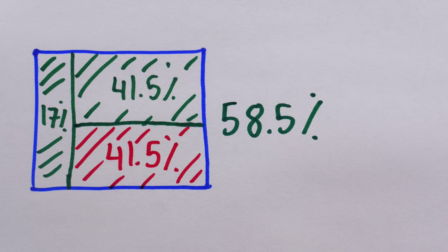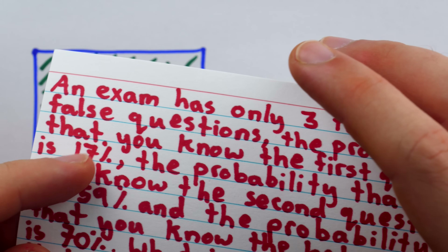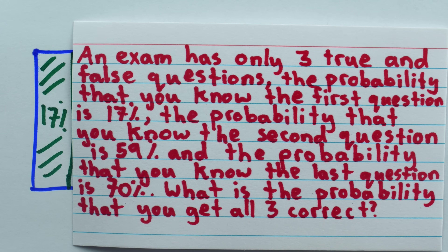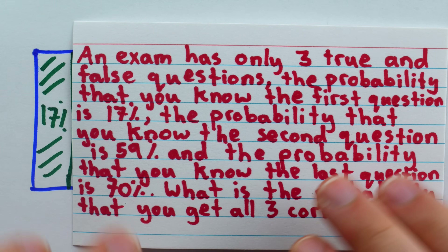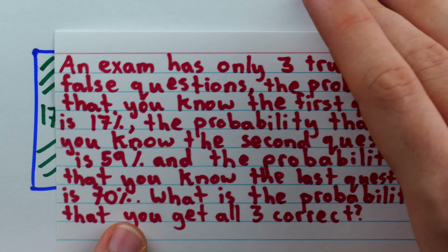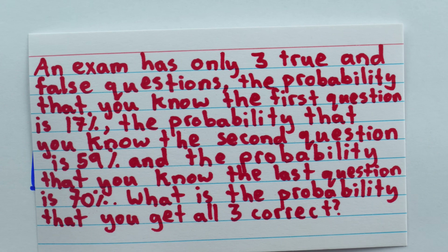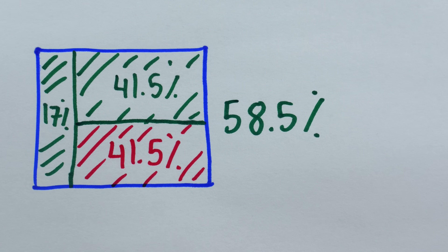58.5% might seem like a pretty high number, given that there was only a 17% chance we'd even know the answer to the question. But it seems hard to imagine that this problem would specify the questions are true or false unless we were supposed to assume that even if we don't know the answer, we still have a 50% chance of getting it right.